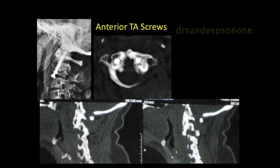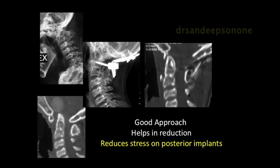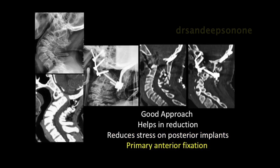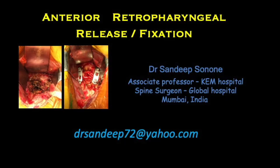Anterior transarticular screws can be used where feasible, compressing the whole construct anteriorly and aiding fusion. To summarize, this is a good approach: the anterior retrofaryngeal approach helps in good release, reduction, and correction of kyphosis, and definitely reduces the stress placed on the posterior implants. In a few resistant or dysplastic cases, primary anterior fixation is an option. Thank you very much for watching this video. For any queries, you can reach out at drsandeep72@yahoo.com.